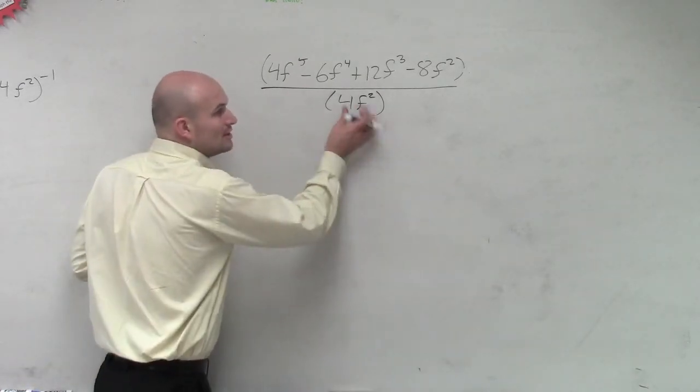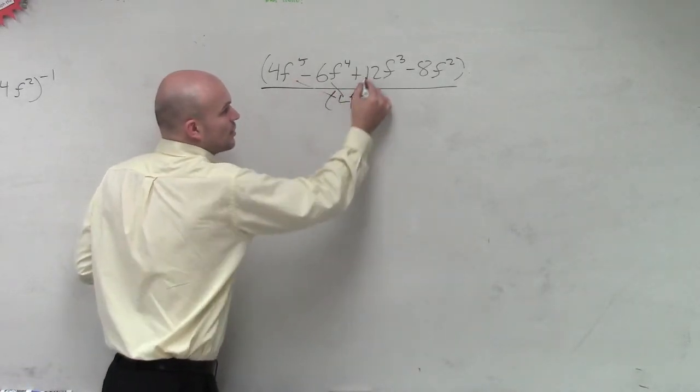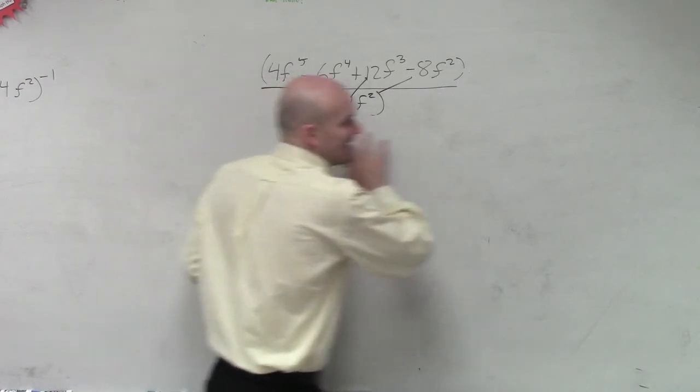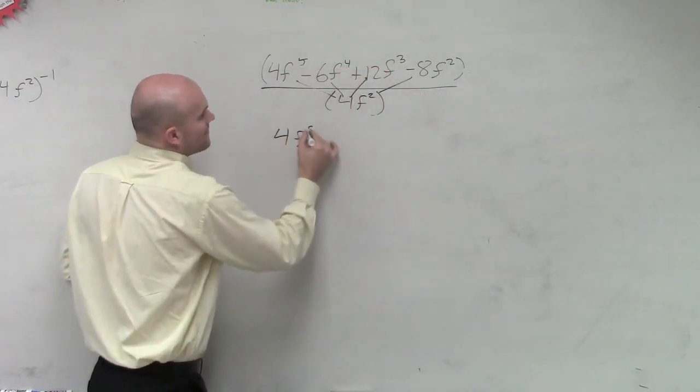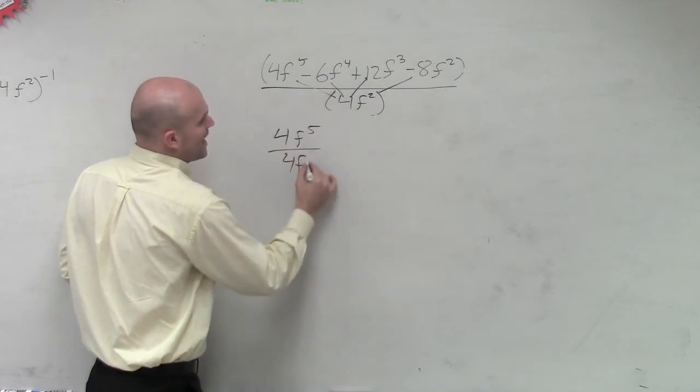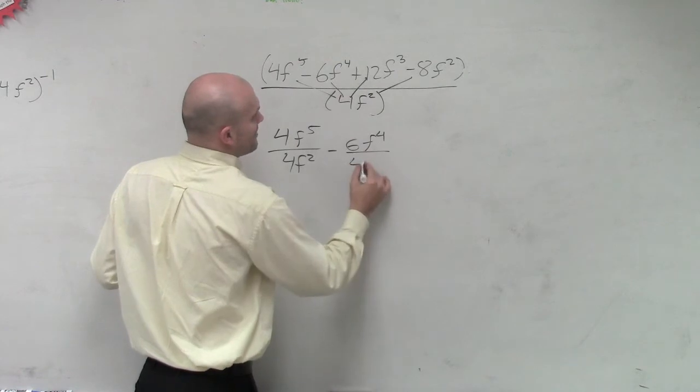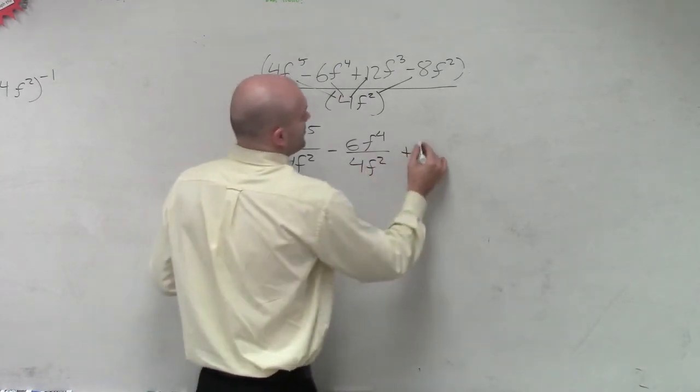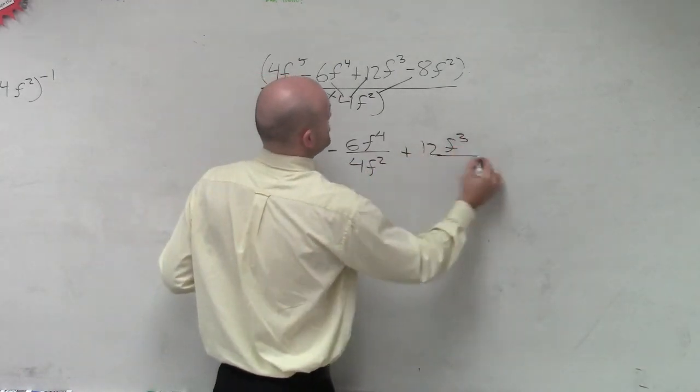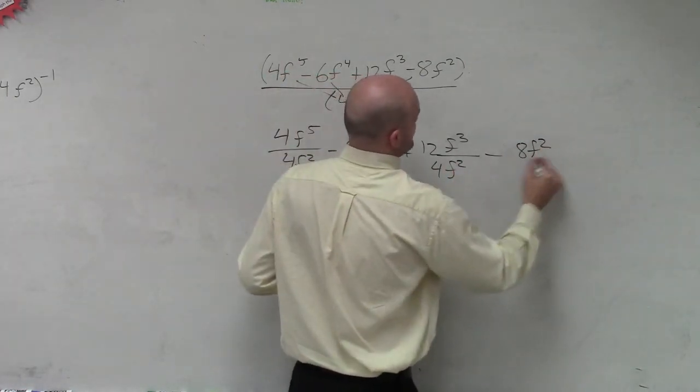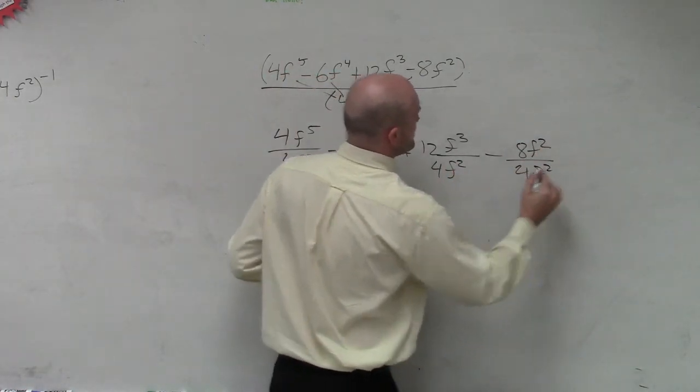This monomial divides into each one of those terms. So I'm going to rewrite that all separately. So I'm going to write 4f to the fifth divided by 4f squared minus 6f to the fourth divided by 4f squared plus 12f cubed divided by 4f squared minus 8f squared divided by 4f squared.